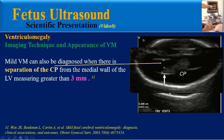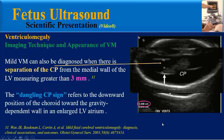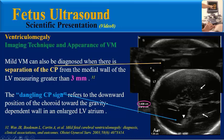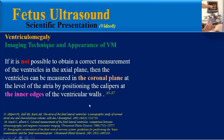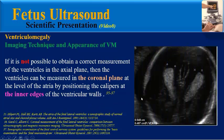To decrease possible technical deficiencies, the axial view should be strictly assessed by confirming that the proximal and distal calvarial margins are equidistant. Anterior landmarks include the cavum septi pellucidi, and posterior landmarks the fluid-filled V-shape of the ambient cistern. Ventriculomegaly can also be diagnosed when there is separation of the choroid plexus from the medial wall of the lateral ventricle measuring greater than 3 mm.